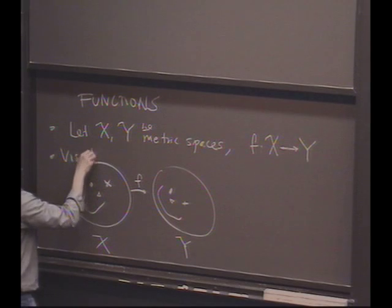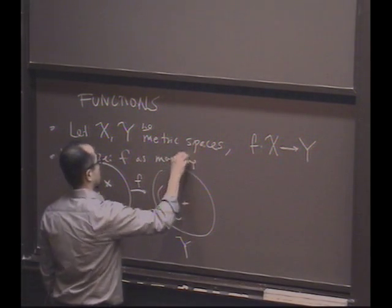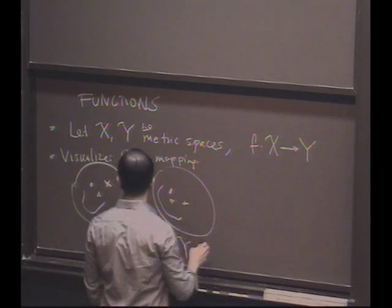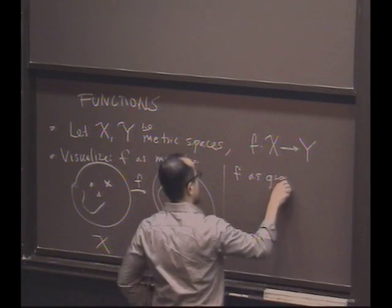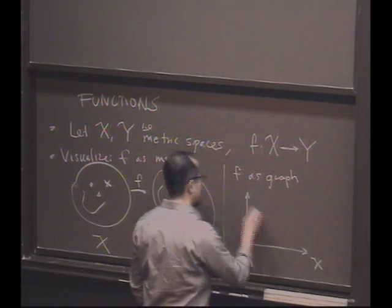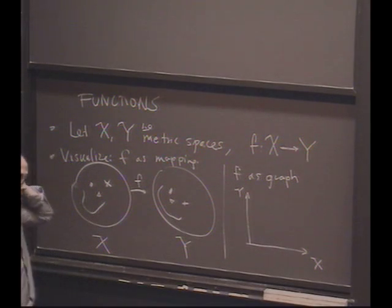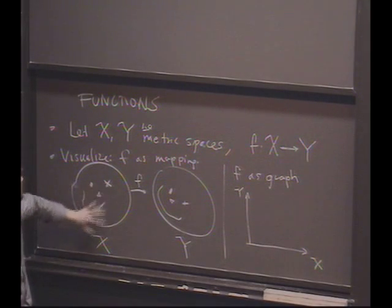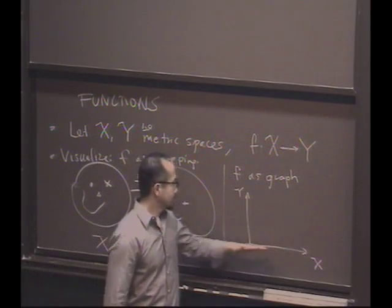As a graph, you'd have to put these things on the same diagram. You put X here and you put Y here. The way I've drawn this, this is something two-dimensional and this is something two-dimensional, so down here you'd have two dimensions and up here you'd have two dimensions.